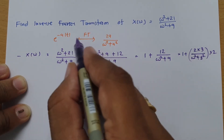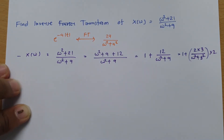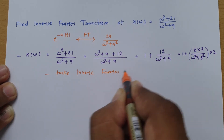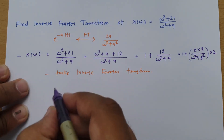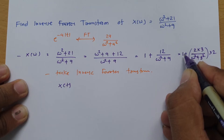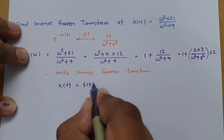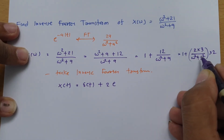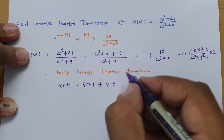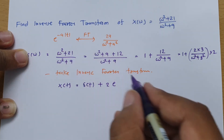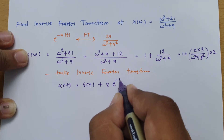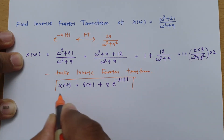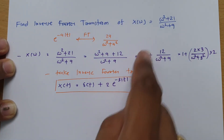Comparing with the standard form and taking the inverse Fourier transform on both sides: the inverse FT of 1 is the impulse signal δ(t), and comparing 2·(2·3)/(Ω² + 9) with 2a/(Ω² + a²) gives a = 3. So x(t) = δ(t) + 2 · e^(−3|t|). With a little adjustment we can easily solve this type of question.